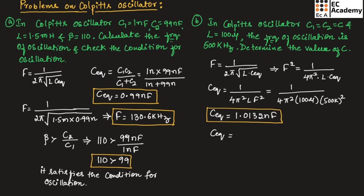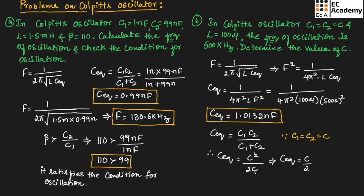We know C equivalence = (C1 × C2) / (C1 + C2). Since C1 = C2 = C, we can write C_eq = C² / 2C, and cancelling gives C_eq = C / 2. Therefore, C = 2 × C_eq. Substituting the value, C = 2 × 1.0132 nanofarad, so C equals 2.026 nanofarad.